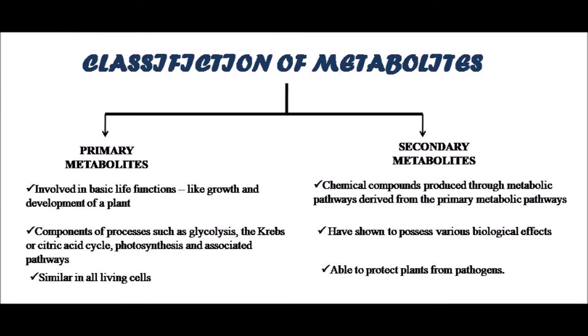Let us now see how we can classify the metabolites. Generally, the phytochemical constituents of plants fall into two broad categories based on their role in basic metabolic processes. They are primary and secondary metabolites. Primary plant metabolites are involved in basic life functions like growth and development of a plant, and therefore they are more or less similar in all living cells.